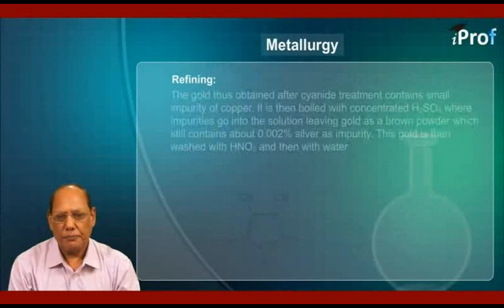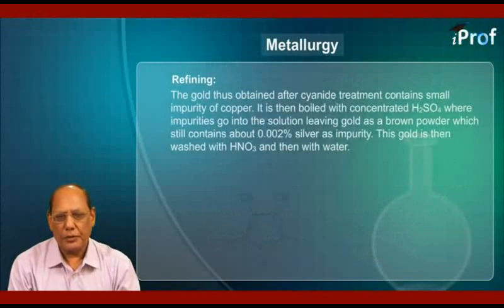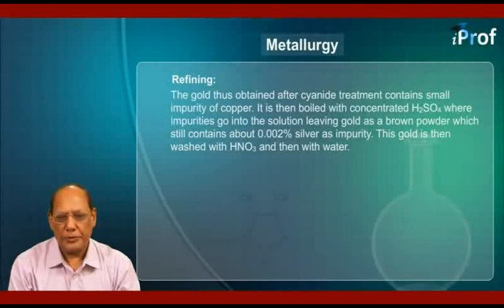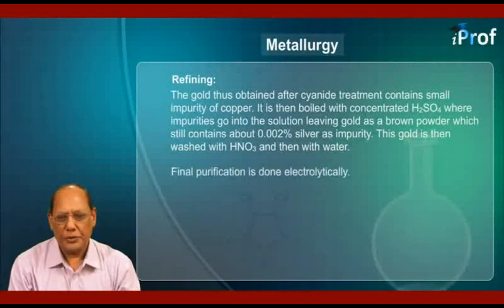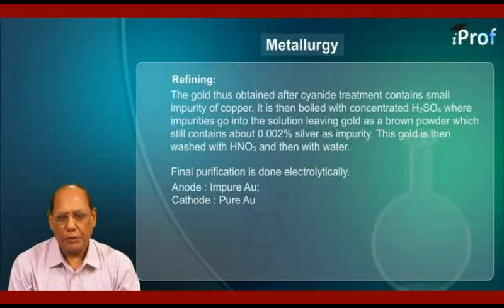Finally, refining. The gold obtained after cyanide treatment contains a small impurity of copper. It is then boiled with concentrated sulfuric acid, where impurities go into solution, leaving gold as a brown powder which still contains about 0.002% silver as impurity. This gold is then washed with nitric acid and then with water. Final purification is done electrolytically, for which the anode is made up of impure gold.